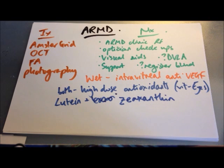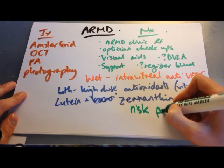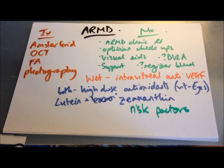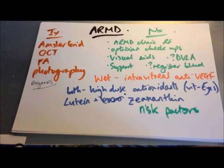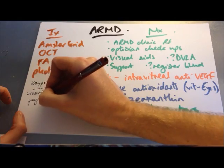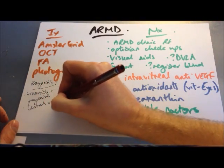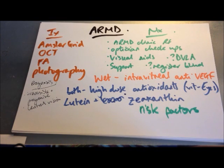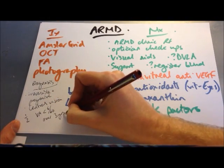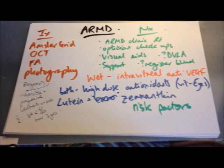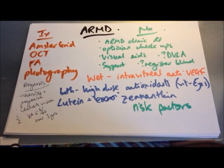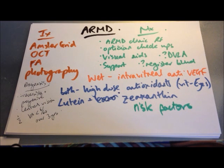A diet rich in macular carotenoids — lutein and zeaxanthin, found in leafy greens like spinach and kale — is associated with decreased risk of wet disease. Control risk factors: encourage smoking cessation, monitor blood pressure, and watch weight. The condition is irreversible and progressive, affecting central vision. In patients with visual acuity better than 6/60, half will become blind or partially sighted over three years. Similarly, untreated wet AMD carries a risk of visual acuity of 6/60 or worse over three years.